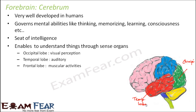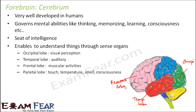The frontal lobe is for all muscular activities. This portion here is the frontal lobe, present at the front where our forehead is. It controls muscular activities — for example, moving your hands up or down, any sort of movement. The parietal lobe is for touch, temperature, smell, and consciousness. Each section of the cerebrum has its own job, making the cerebrum very well developed.